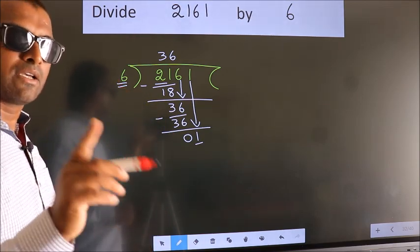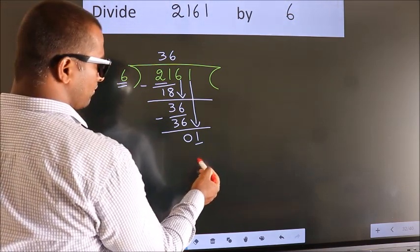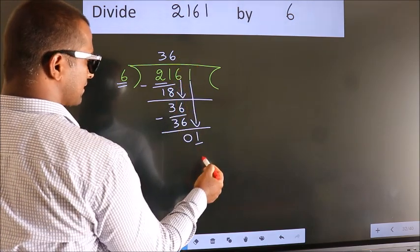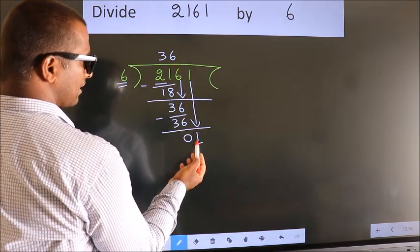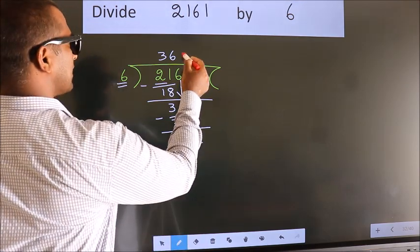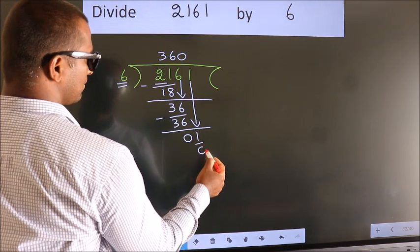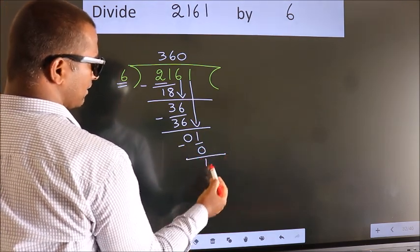Instead of that, what we should think of doing is which number should we take here. If I write 1, we get 6, but 6 is larger than 1. So what we do is we take 0 here. So 6 into 0 is 0. Now we subtract. We get 1.